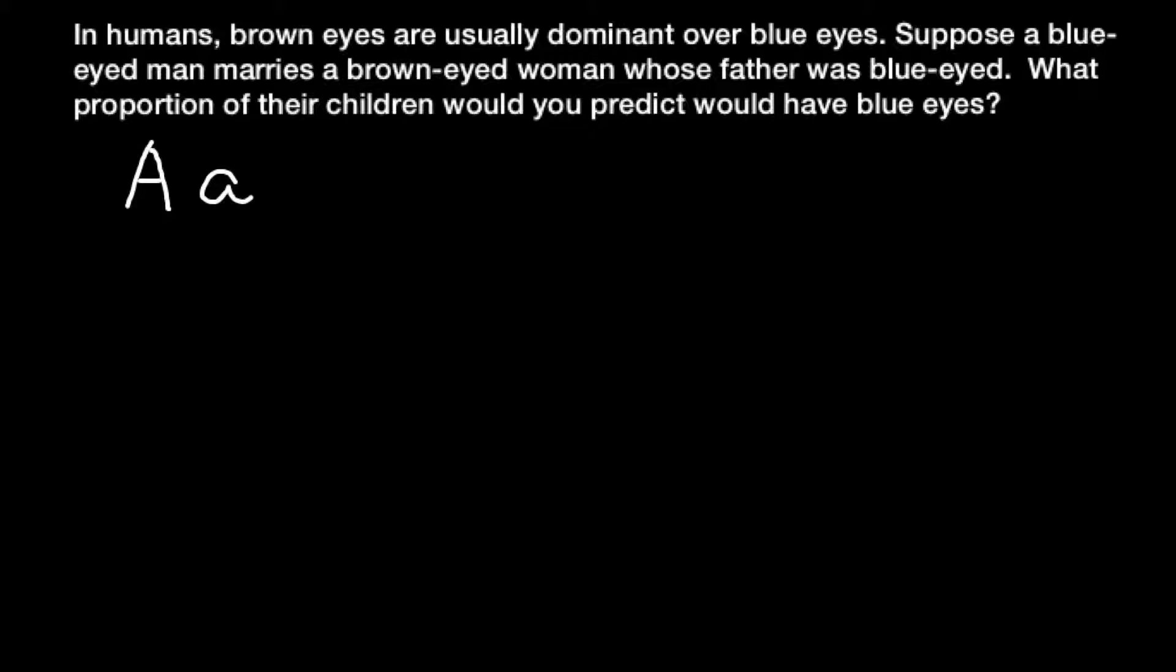So these two alleles can make three genotypes. One would be capital A, capital A, and that means this would be brown eyes if a person would have this genotype. And the last variant would be small a, small a, and this variant means blue eyes.